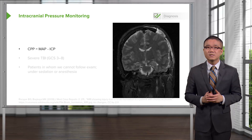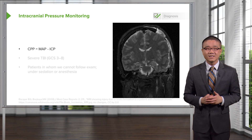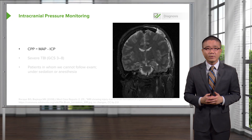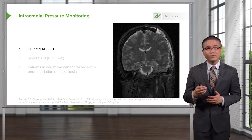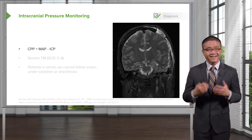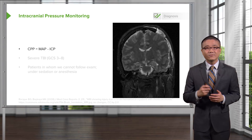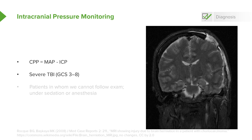One of the clinical signs to evaluate for is intracranial pressure monitoring, to prevent intracranial hypertension or high ICPs. A very useful equation to remember is the cerebral perfusion pressure — the CPP is the difference between the mean arterial pressure and the intracranial pressure: CPP = MAP minus ICP. In severe TBI patients where GCS is less than 9 or considered comatose, intracranial pressure monitoring may help with diagnosis of further deterioration. Comatose patients or those on severe sedation or anesthesia will not likely participate in your neurological examination and may also require intracranial monitoring.